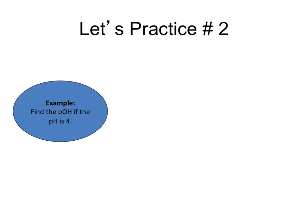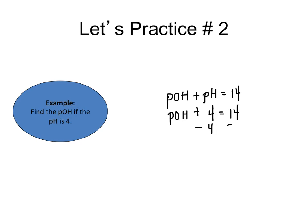In this next example, they're asking you to find the pOH using the equation pOH plus pH equals 14. Since they're giving me a pH of 4, all I need to do is subtract 4 from both sides, which gives me a pOH equal to 10.